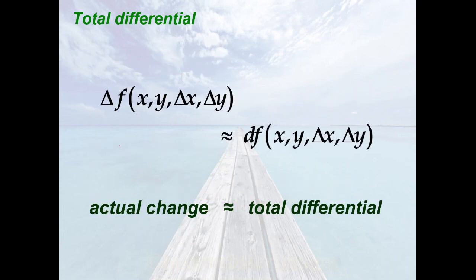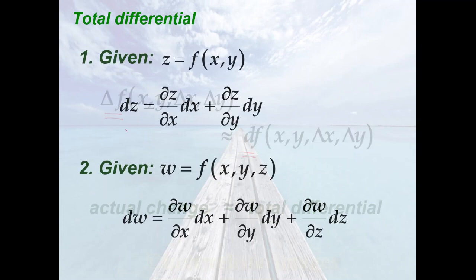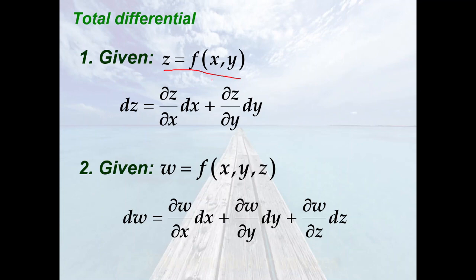An important application of total differential is approximation. When delta x and delta y — the changes in x and y — are small, the total differential df approximates the actual change in the function value, or delta f. So let z equal f of x, y, and let delta x, also equal to dx, and delta y, also equal to dy, represent changes in x and y respectively. Then the total differential of z, denoted dz, is equal to the partial of z with respect to x times dx plus the partial of z with respect to y times dy.